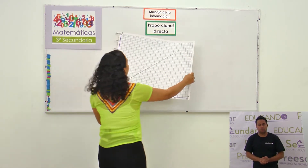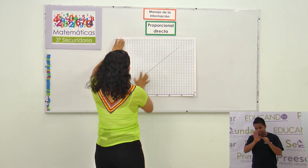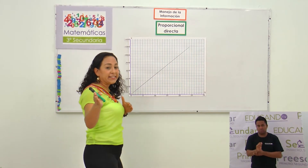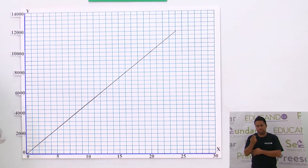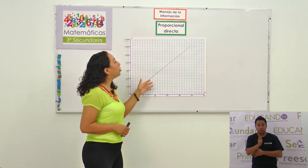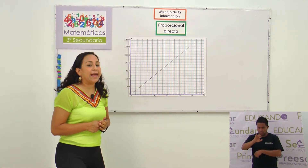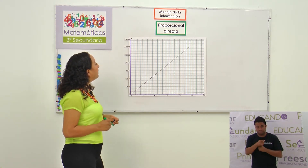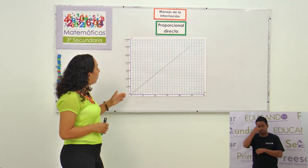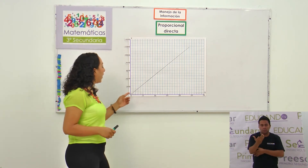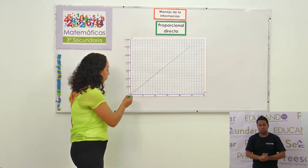¿Logras ver esta gráfica? Pues aquí está una línea recta. En otras clases, tú y yo hemos aprendido que esta línea recta es una función lineal. Esta vez se va a llamar proporcionalidad directa en el eje de manejo de la información. Analicemos esta gráfica: representa la distancia y el tiempo que recorre un avión.